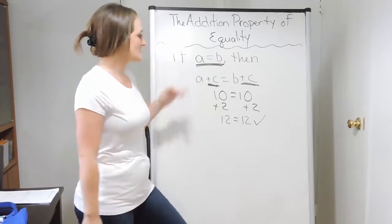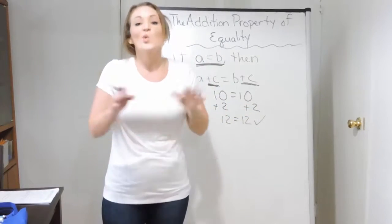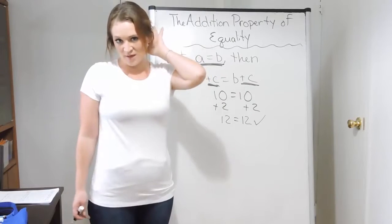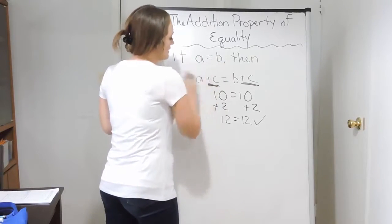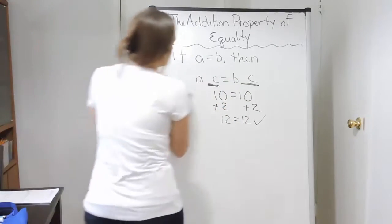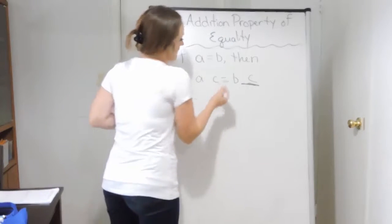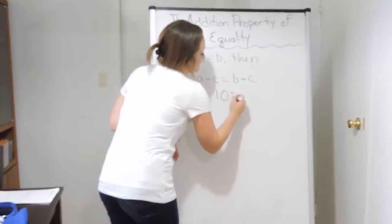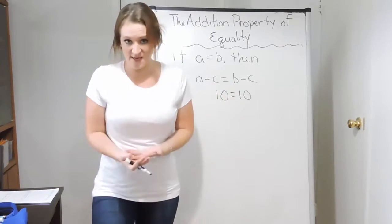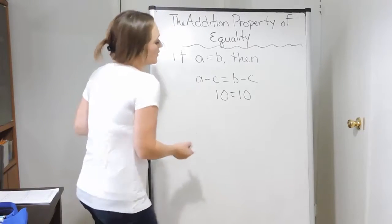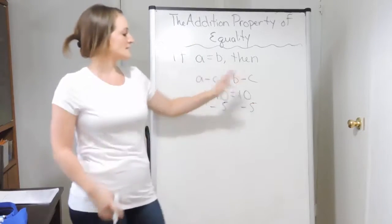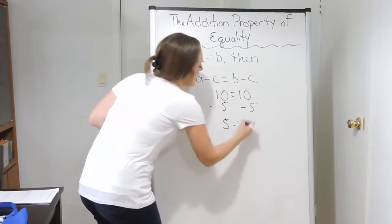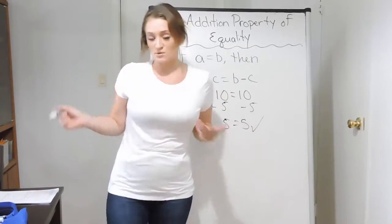Essentially what this property is telling us is that as long as we're adding the same thing to both sides, we're good. The same thing works for the subtraction property of equality. If A equals B, then A minus C is equal to B minus C. Starting with 10 equals 10 again — all this is saying is that I can subtract the same thing from both sides and I'm still going to get a true equation. So I can subtract 5 from one side, and as long as I'm subtracting the same thing from the other side, this is still a true equation. Because 10 minus 5 is 5 over here, and I'm also going to get a 5 over here. And 5 does equal 5.